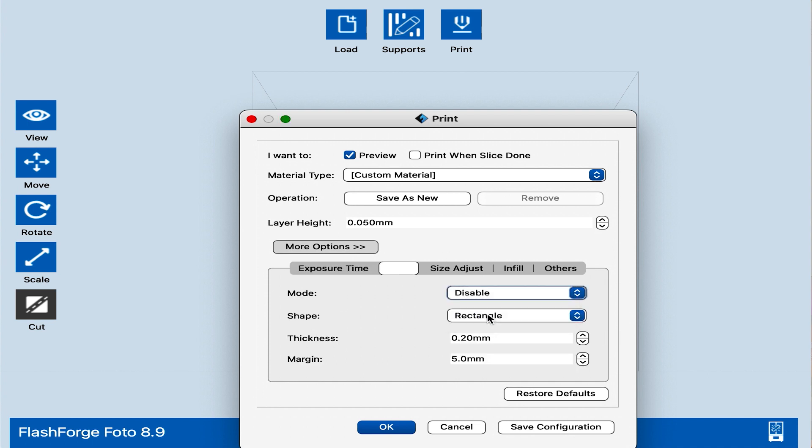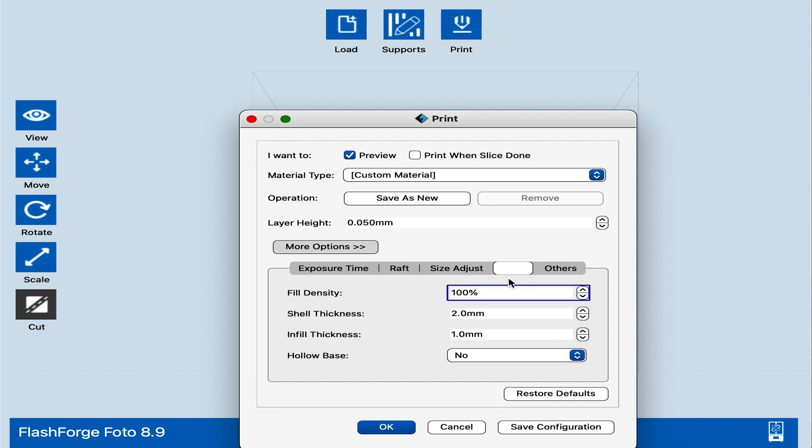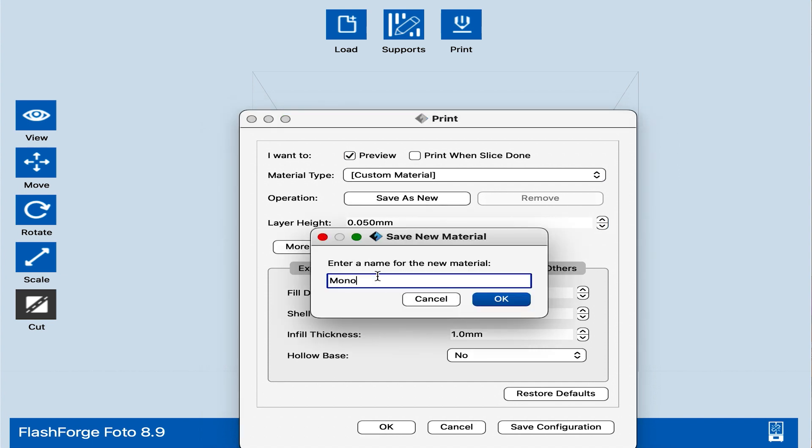Gradual layers. That would be transition layers. So, we can leave that at 8. Raft. We're going to disable it. We don't want a raft. We don't want to adjust the size. And we don't want to change the fill density. And we don't want to hollow. So, we'll leave all that there. In fill, we don't need any of that. You can see up here is the layer height. So, you can adjust that with these arrows. Or we'll just leave that at 0.05. So, that's 50 microns. And we... Let's hit save as new. And we'll call this Monocure 3D.